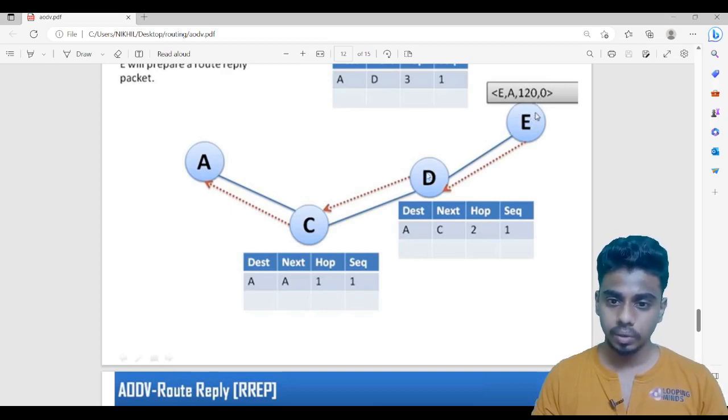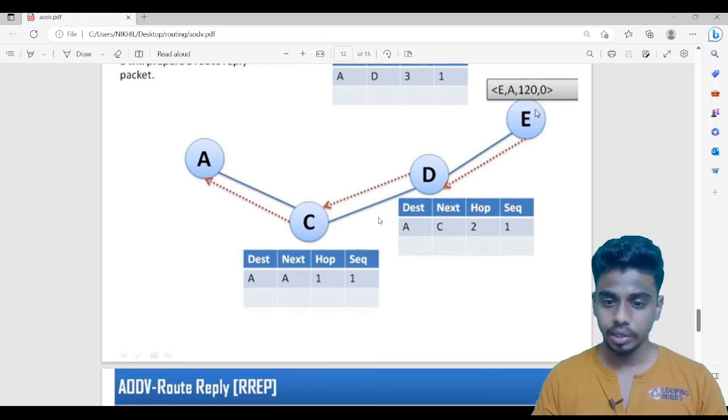D will have information about A. D will have information about A. In order to go to A, it has to go to C. This will pass it to C. It will also update the information about E in the routing table.